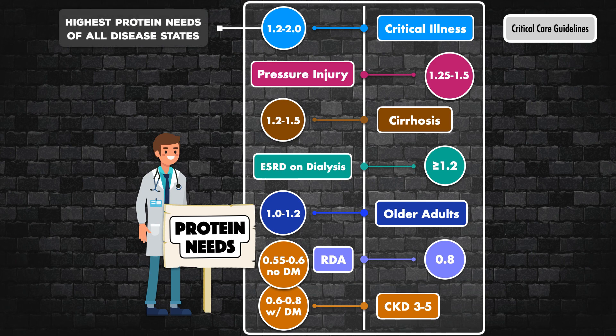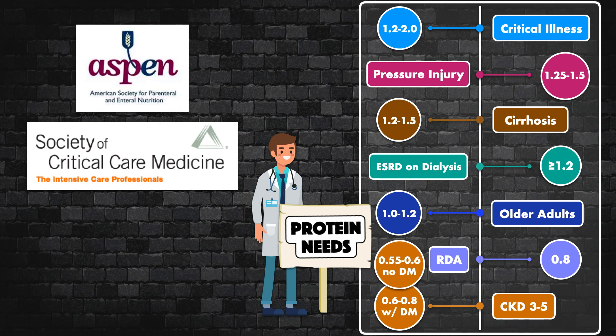Generally speaking, critical illness represents the highest protein needs of all disease states. I'm anticipating that ASPEN and the Society of Critical Care Medicine will update their recommendations for subsets of this population, like burns and obesity, soon, and I'll make a new video on it when they do.